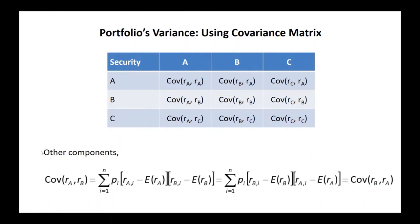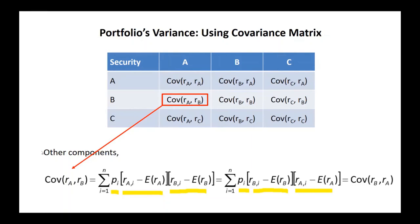For other components such as A and B: covariance of A and B is the sum of probability for each case, with a deviation in the first component A and another deviation from the second component. However, it is exactly the same as probability times the second deviation and the first deviation, since A times B equals B times A. That means the covariance of A and B should be the same as covariance of B and A.